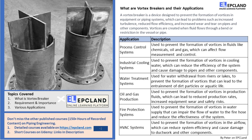Now, to understand the importance of vortex breakers, let's understand the effect of vortices on the flow. Vortices create an obstruction in the smooth flow, draw down gases inside it, and create a two-phase flow that has several drawbacks. Vortices disrupt the flow pattern inside the pipe or nozzle and can create erosion of pipes and fittings. The occurrence of a vortex in a fluid system leads to a reduction of pressure, increasing the requirement of pumping force. Therefore, it's crucial to avoid vortex formation in fluid systems.